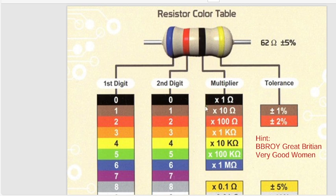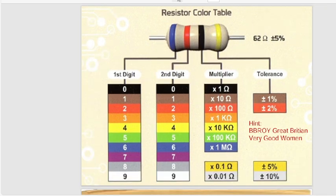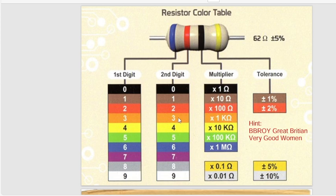If we talk about the resistor color code table, you don't need to worry about it because you can easily understand it with a hint. The hint is: BB Roy Great Britain Very Good Woman. We need to memorize this to understand the color coding. Black, Brown — BB; Red, Orange, Yellow — Roy; Green for Great; Blue for Britain; Violet for Very; Gray for Good; and White for Woman.